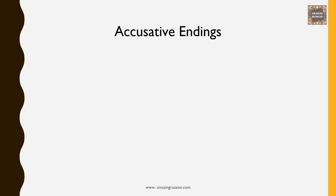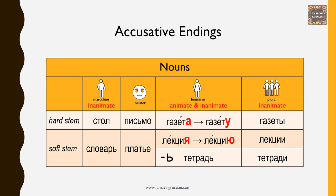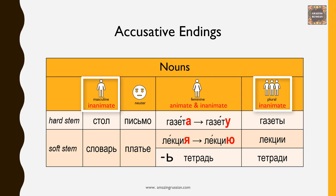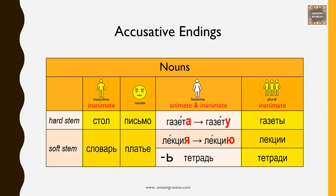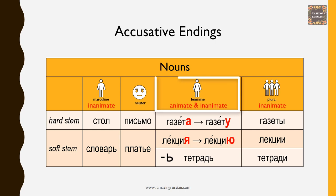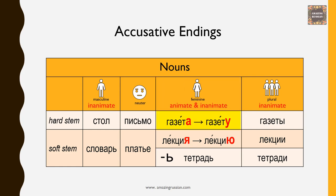Let's talk about accusative endings. First, nouns. Note that inanimate masculine, plural, and neuter nouns do not change in the accusative case. As you can see from the table, the only change in endings is in feminine nouns — they can be animate or inanimate. Hard stem nouns ending in А change into У: газета → газету. Soft stem Я changes into Ю: лекция → лекцию. Мягкий знак words like тетрадь do not change.